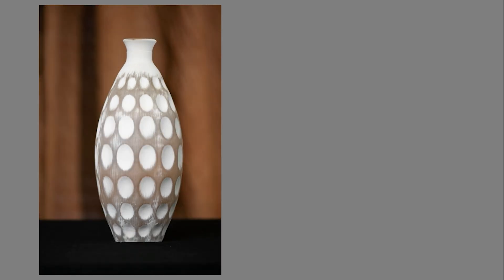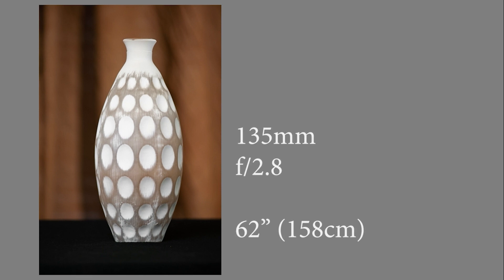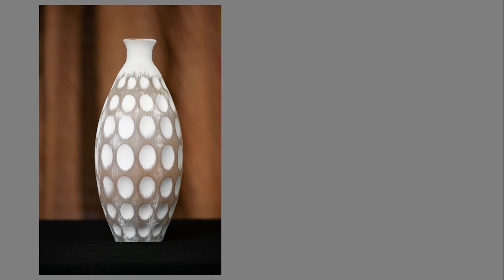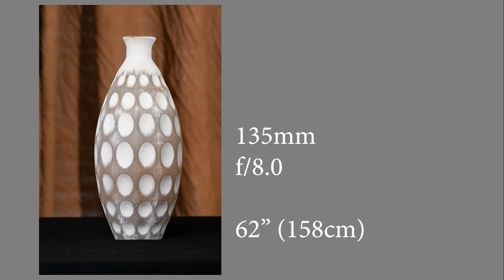Now moving up to a 135mm lens. This is not a modern lens — it's a 135 designed for a Minolta camera back in the film days, but I have an adapter that allows me to use it on my Sony mirrorless. Here we start off at f2.8. We're now 62 inches away from the object, as opposed to 36 inches with the 85mm, for basically the same framing. I like how this looks. And here's the same lens at f8.